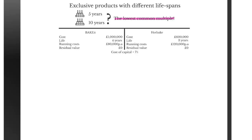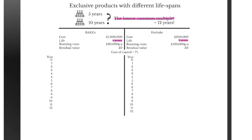So what is the lowest common multiple between four years and three years? Simple mathematics tells us the lowest common multiple is 12. We therefore have to scale the entire analysis over a period of 12 years, after which we can identify the cheapest option. Comparing them side by side over 12 years, we note that there will not just be running costs every year — there will also be a repurchase cost every few years: every four years for the Bake-It and every three years for the Hot-Bake.